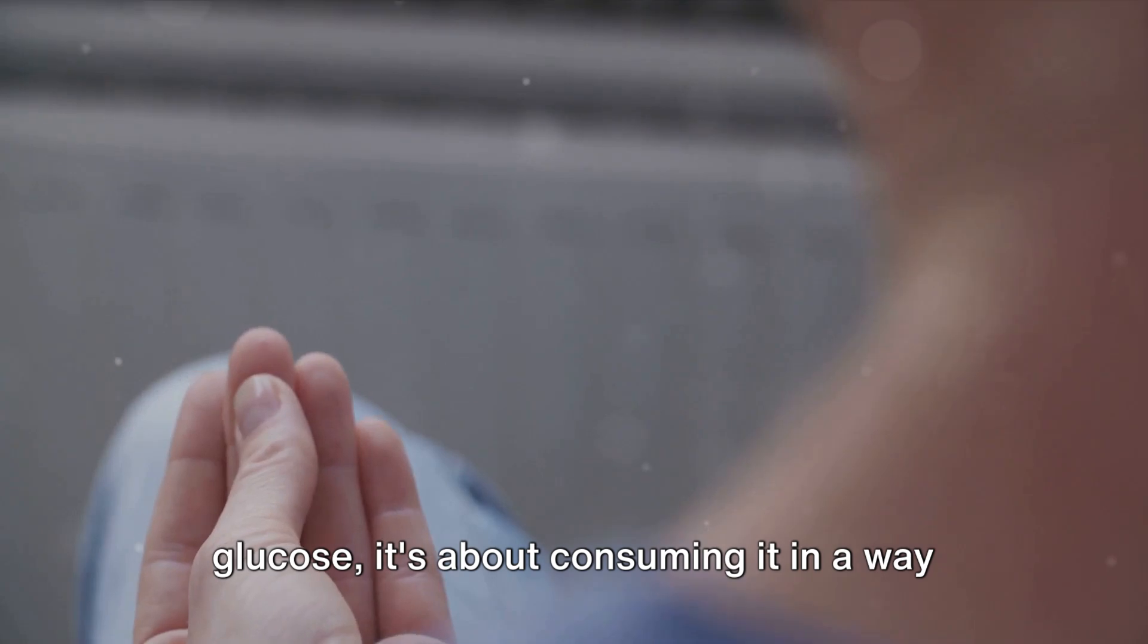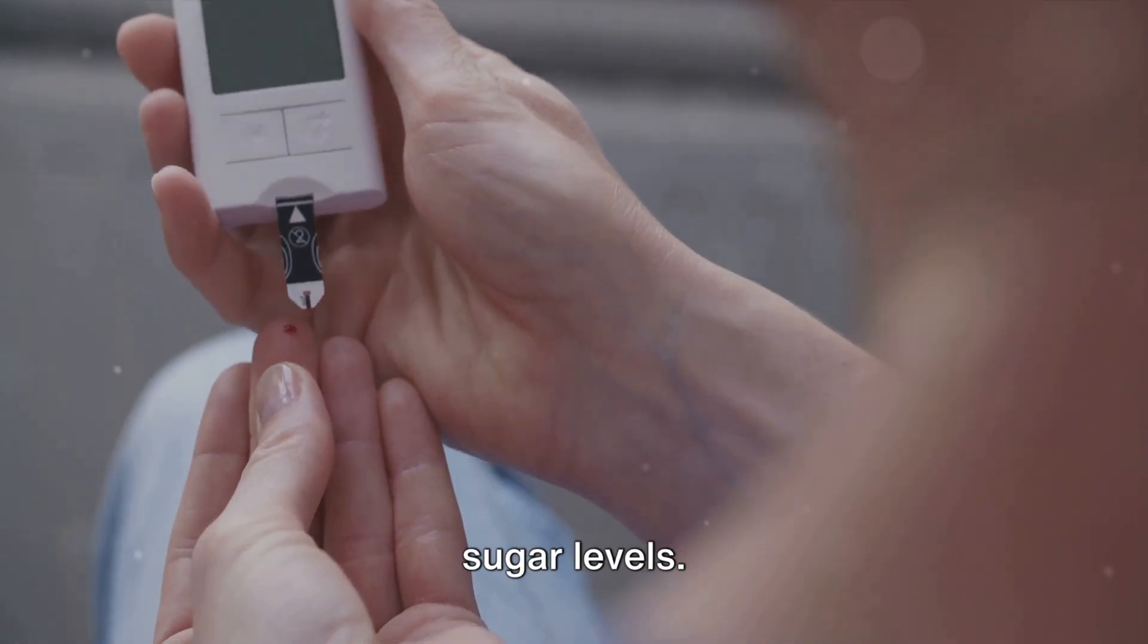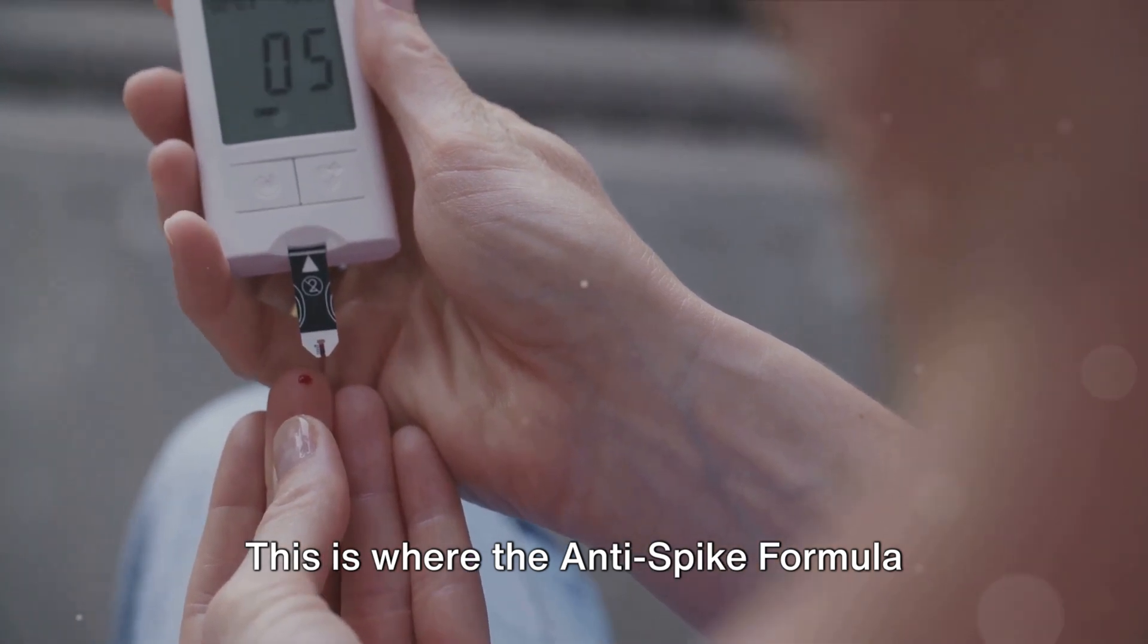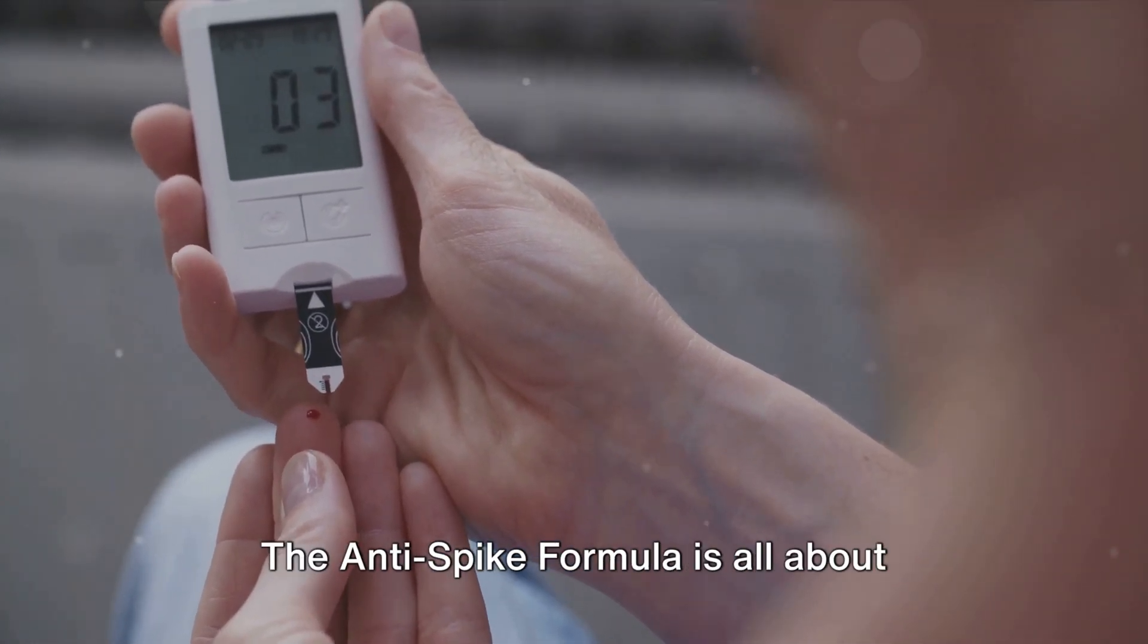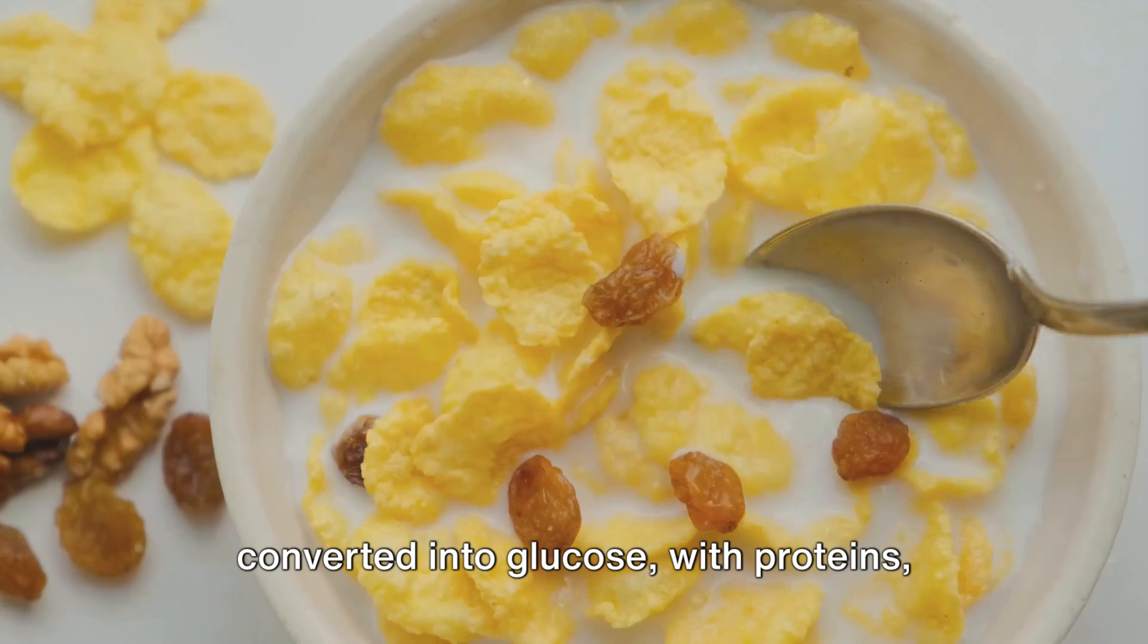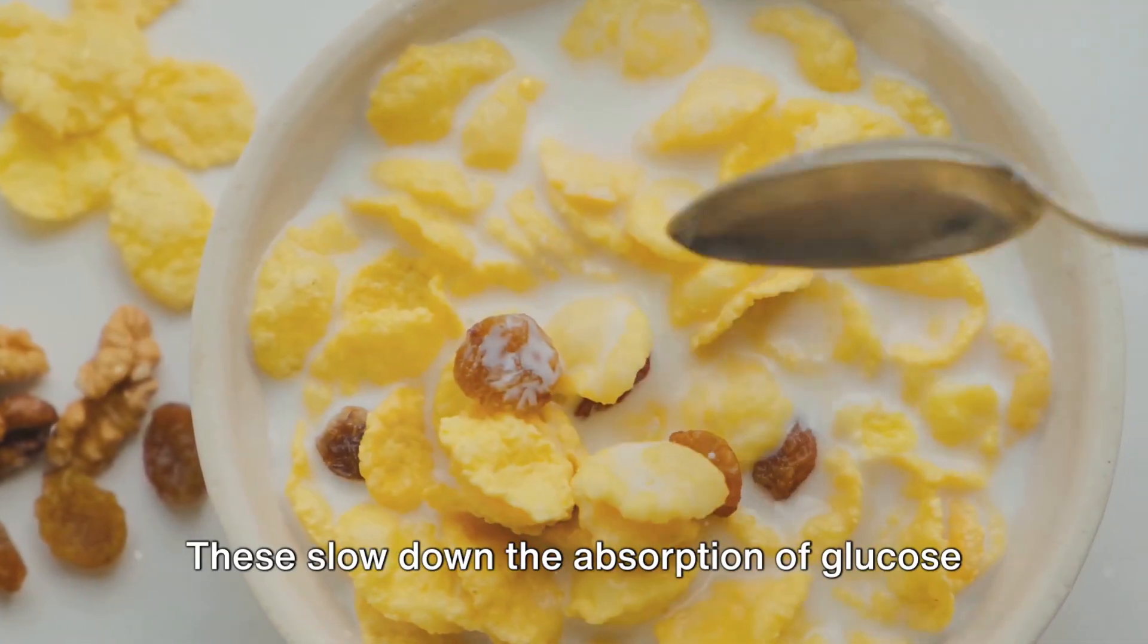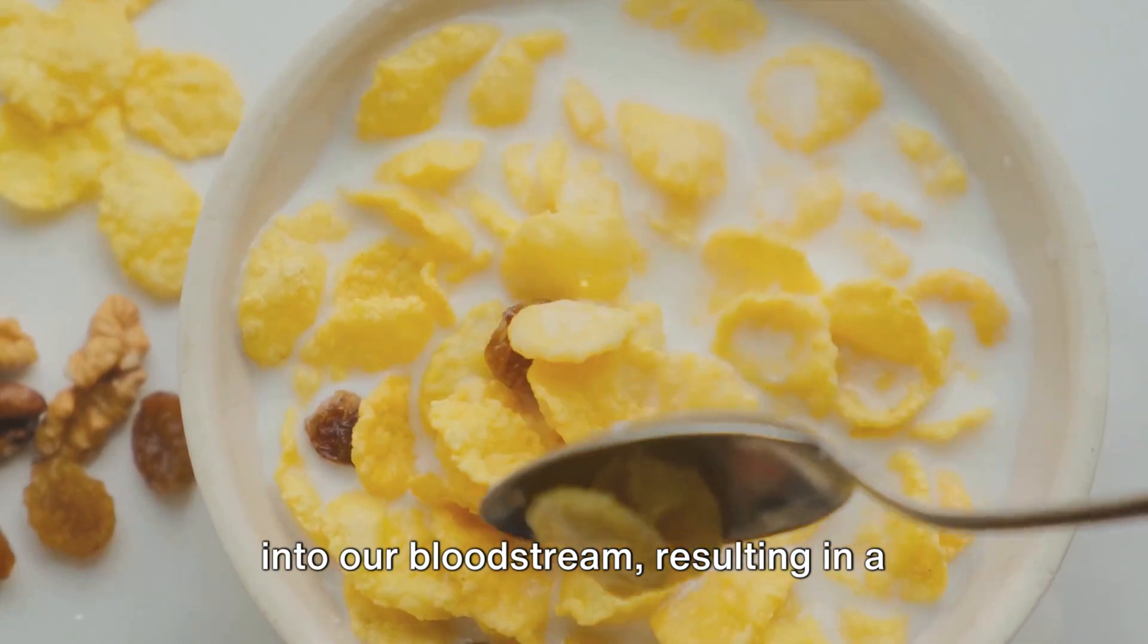But it's not just about consuming glucose. It's about consuming it in a way that doesn't cause spikes in our blood sugar levels. This is where the anti-spike formula comes into play. The anti-spike formula is all about pairing carbohydrates, which are quickly converted into glucose with proteins, fats, and fibers. These slow down the absorption of glucose into our bloodstream, resulting in a steady supply of energy to our cells and mitochondria.